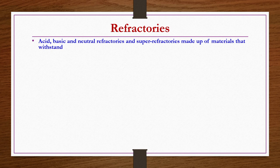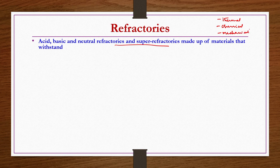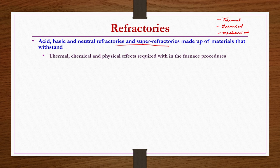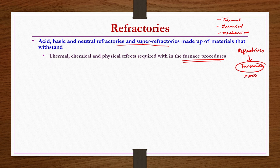Refractories by chemical nature can be acid, basic, or neutral. These refractories and super refractories are made up of materials that withstand thermal stability, chemical stability, and mechanical stability. They should withstand thermal, chemical, and physical effects required within the furnace. These refractories are primarily used in making furnaces, which are usually operated at very high temperatures above 1000 degrees centigrade, sometimes up to 2000 degrees centigrade.